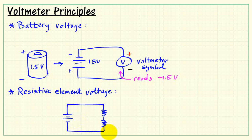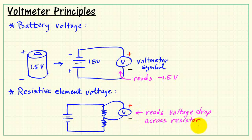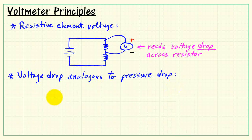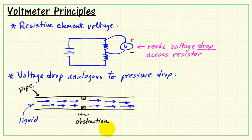Now suppose a different circuit in which we have a resistive element. We might want to measure the voltage across this resistor. In this case, we say the voltmeter reads the voltage drop that appears across the resistor. As electrical current circulates through that circuit, some of the voltage appears across the resistor, and we say that's a voltage drop.